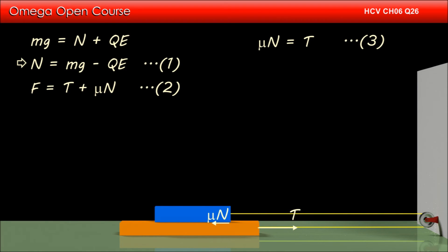Subtracting equation 3 from equation 2, we get F - μN = μN or F = 2μN. Putting the value of N from equation 1, we get F = 2μ(mg - QE). This is our answer.